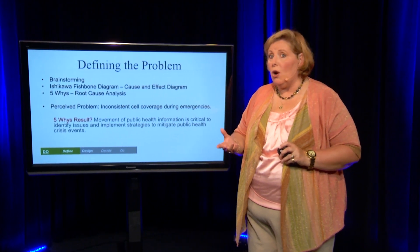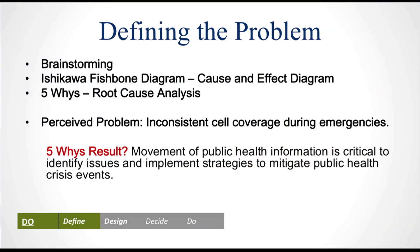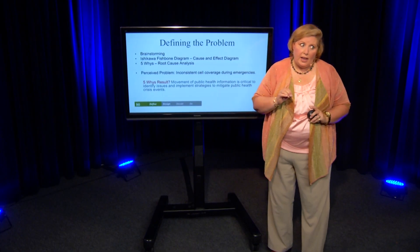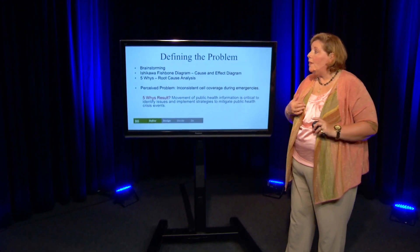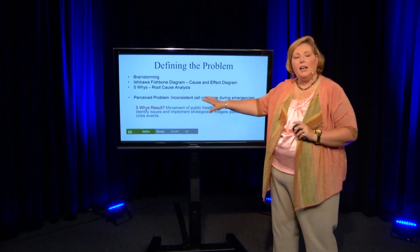Other mechanisms that are very commonplace include the Ishikawa fishbone diagram, which is a cause and effect diagram where you lay down information on lines to look at all the interdependencies. We're not focusing on that today, as it takes a little longer. The one we are going to use is the five whys. Once the group has brainstormed, you take the most common issues and cluster them together, figure out which ones are most important, and then drill it down with the five whys.